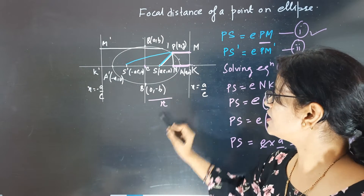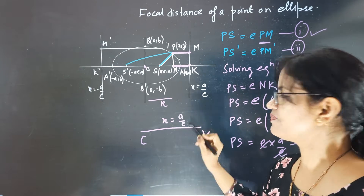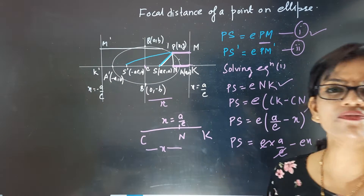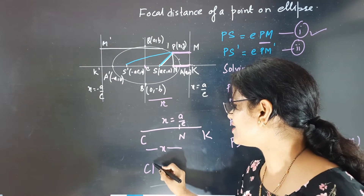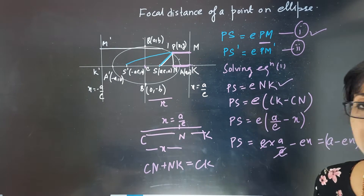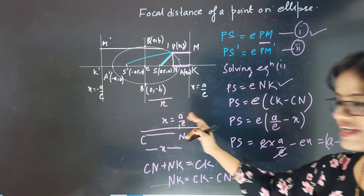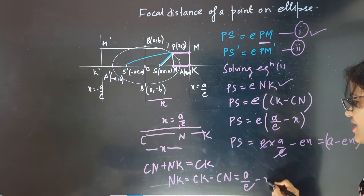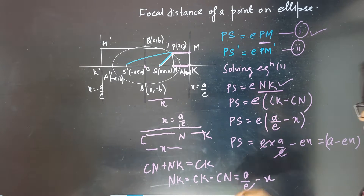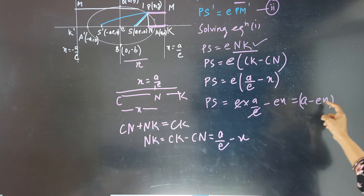The total length CK is x equals a by e. CN is x, so NK equals CK minus CN, which gives NK = a/e minus x. Applying e inside, e and e cancel, so PS comes out as a minus ex.